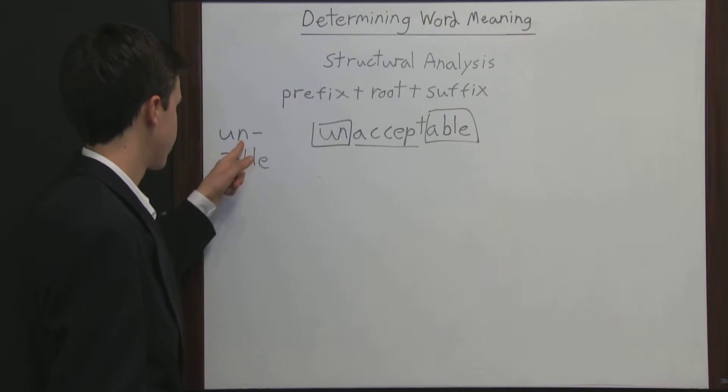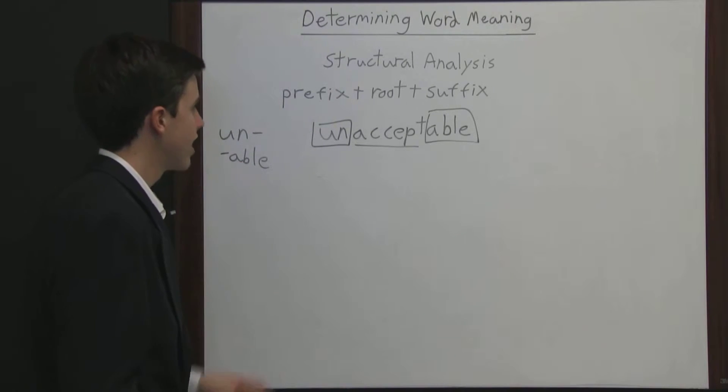So here, since un is a prefix, the word comes after the prefix. And here with able, the word comes before able, because able is the suffix.